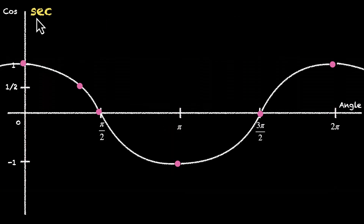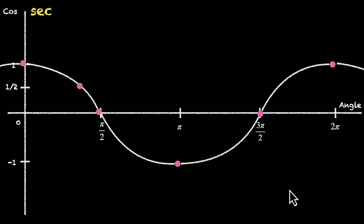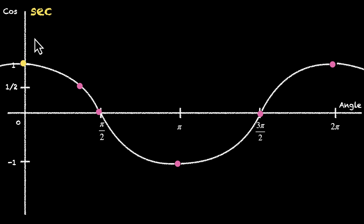Sec is the reciprocal of cos — for whatever value of cos you have for an angle, you'll get its reciprocal for sec. Let's figure out a few points. The easiest points are 1 and minus 1, because the reciprocal of 1 is 1 and the reciprocal of minus 1 is minus 1. So these are the points where the two graphs touch each other. When cos x is 1, sec x is also 1, and for minus 1 we have minus 1.